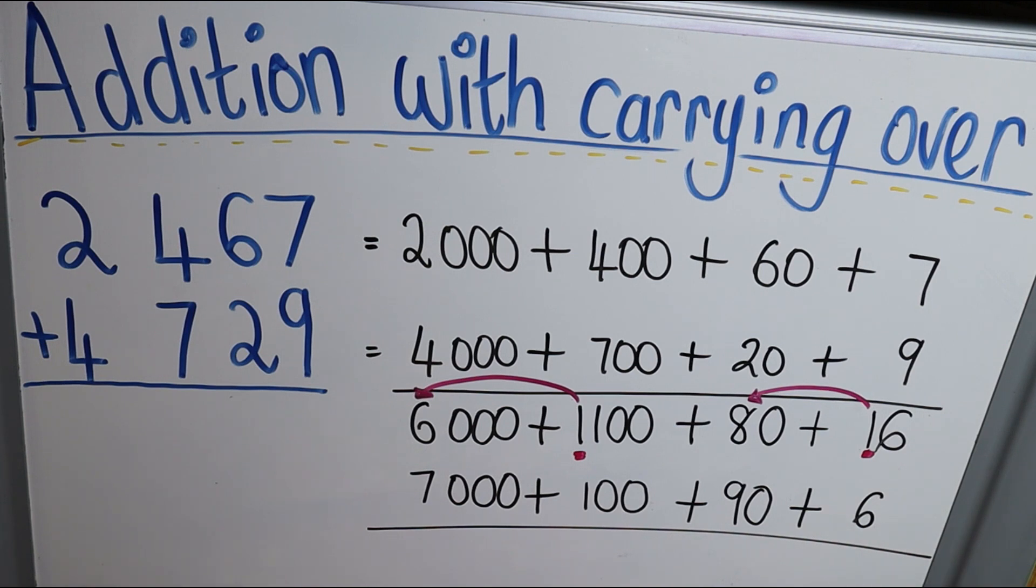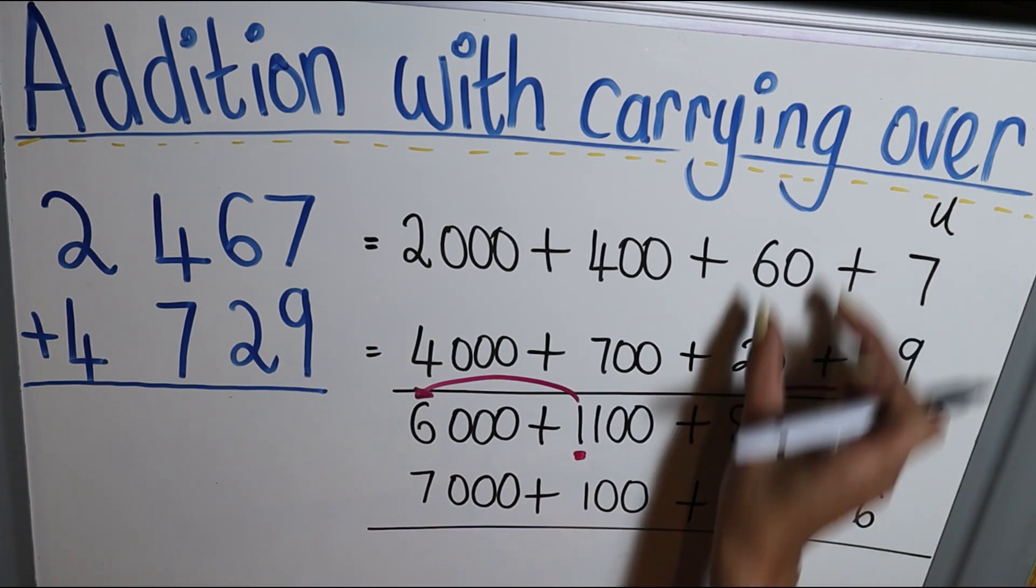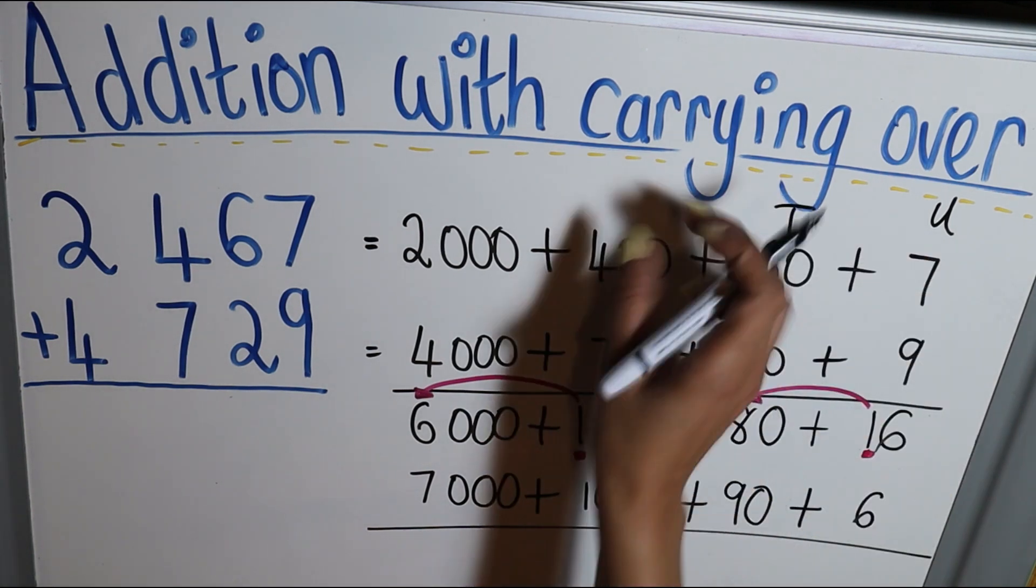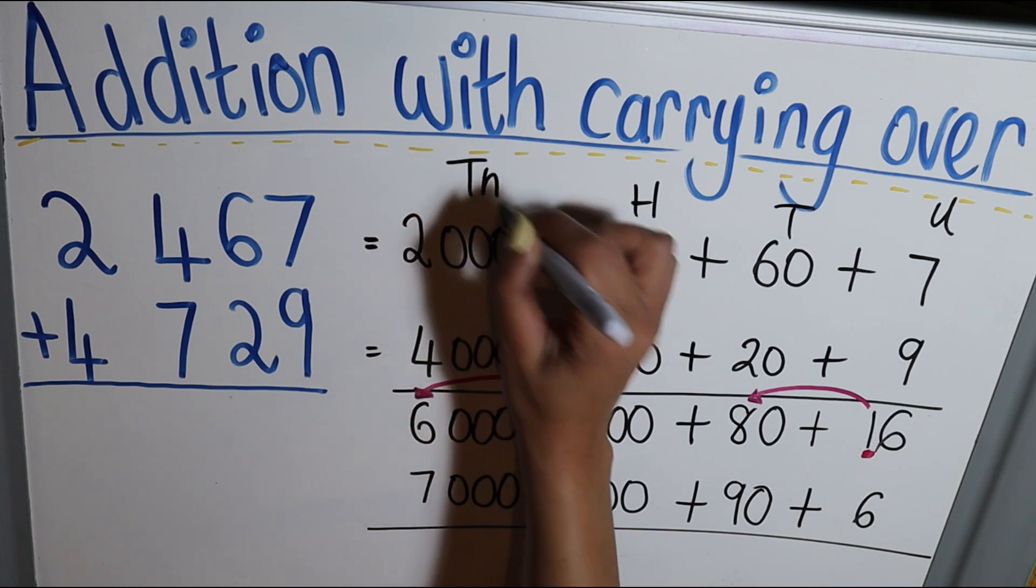Now you will see each number is in its place: this is in the place of the units, this is the tens, that is the hundreds, and this is the thousands.